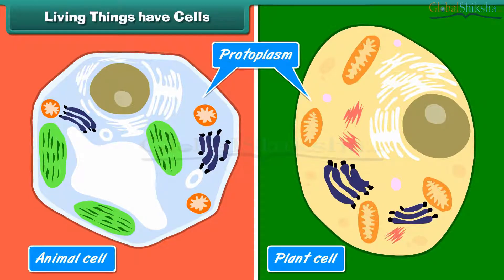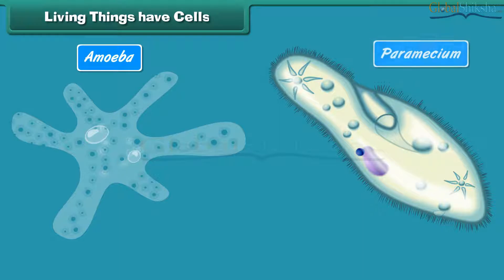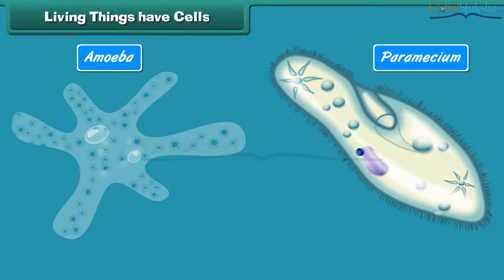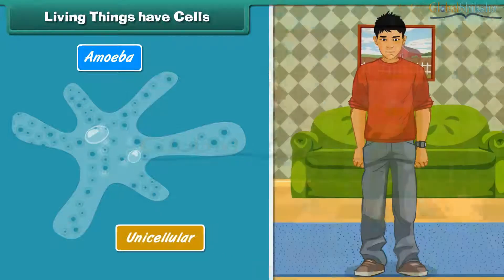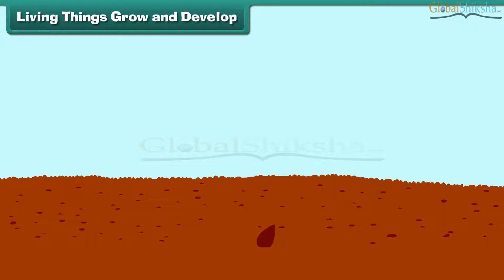The cells are made of protoplasm, or living matter. All the body functions and properties of life are due to protoplasm. Some living organisms, like amoeba and paramecium, are made up of only one cell — they are called unicellular. Organisms made up of many cells are called multicellular.